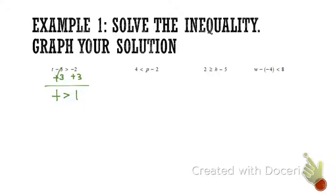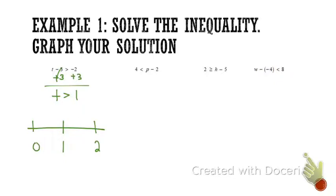t is greater than 1. So now I'm going to graph my solution. We always want our middle number to be that cutoff number we found in our solution, which is 1. To the left, we want 1 unit less than 1, and 1 unit greater than 1 to the right. We have to decide: open dot or closed dot? The inequality symbol tells us — if there's no equal-to bar underneath, it's an open dot. All solutions must be greater than 1, so my arrow is going to the right.